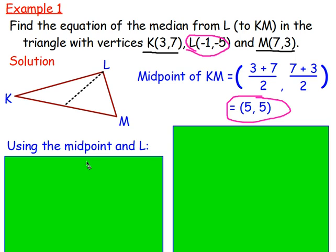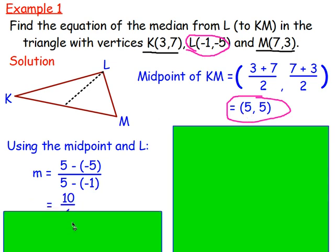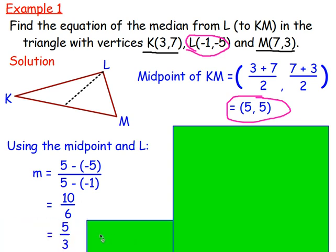Now use gradient point equation. You know the point (5, 5) and you know point L, so to find the gradient of the median use the formula y₂ minus y₁ over x₂ minus x₁. Substituting in: 5 take away negative 5, over 5 take away negative 1, gives 10 over 6. Simplifying, the gradient is 5 thirds. It's best to leave it as a fraction rather than converting to a decimal.